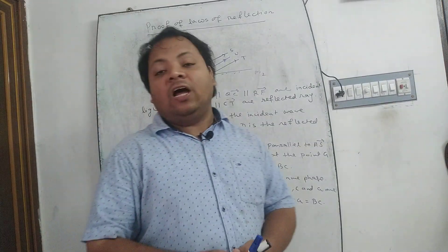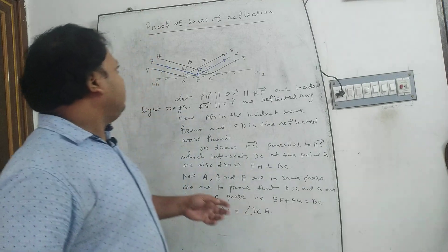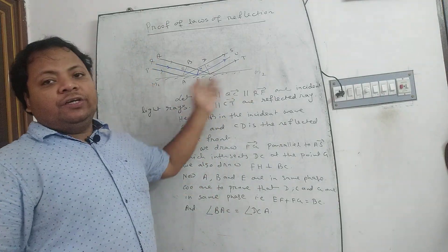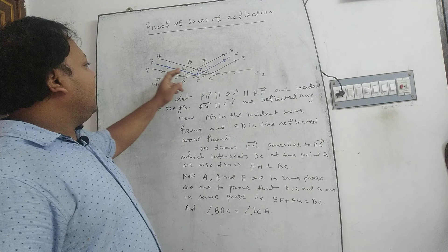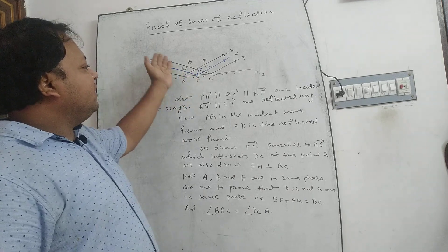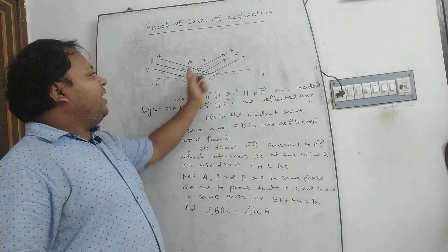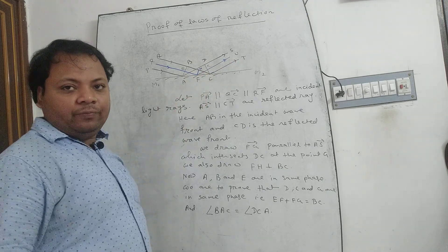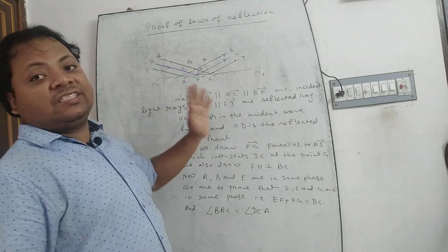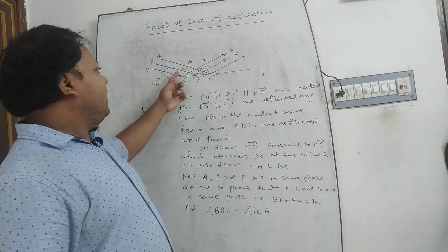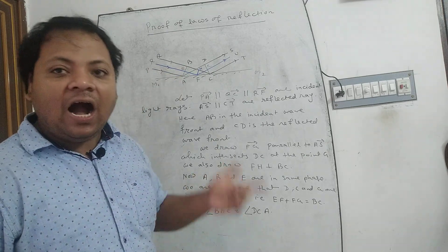Now I am going to prove the laws of reflection using Huygens' principle. Let M1M2 be a plane mirror, and PAQ, C, RF be incident light rays, and AS, CT be reflected light rays. AB is the incident wavefront and BC is the reflected wavefront. E is a point on the wavefront AB, that is, A, B, and E are in the same phase.